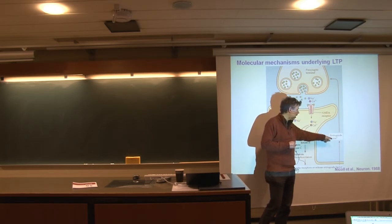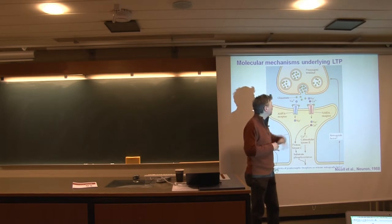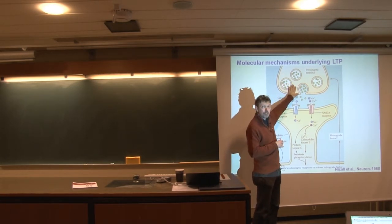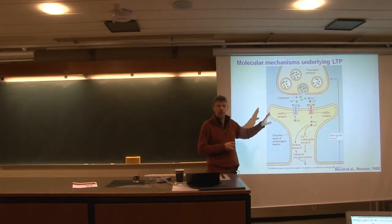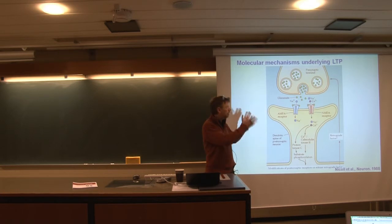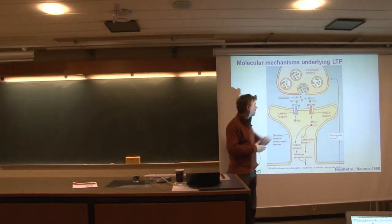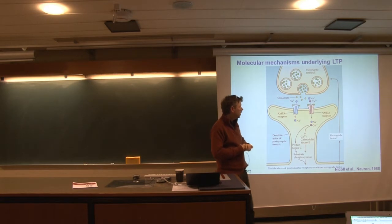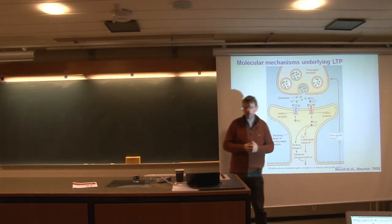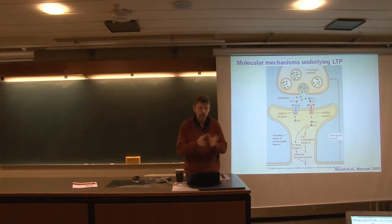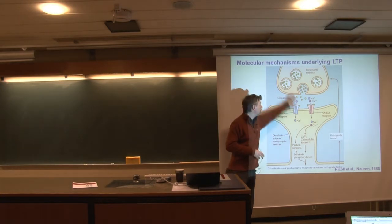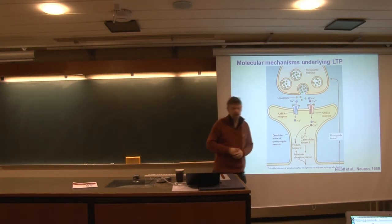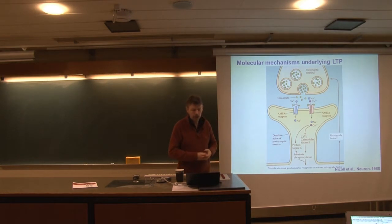It has been shown that there is also retrograde signaling to the presynaptic terminal, so there are also changes at the presynaptic terminal, very much similar to what has been shown in the Aplysia. Again, cyclic AMP and changes in the number of synapses. We know some of these retrograde factors — one of them is NO, which is a gas that is readily diffusible and can spread from one area to another, easily signaling changes at both the pre- and postsynaptic level.